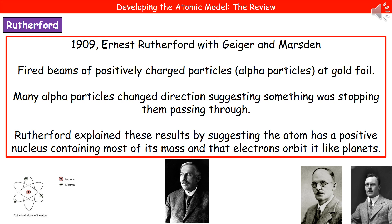Rutherford explained this observation by suggesting that atoms have a positive nucleus that contains most of the atom's mass, and that the electrons are actually orbiting the nucleus, kind of like the planets orbit the sun.